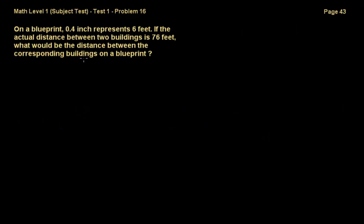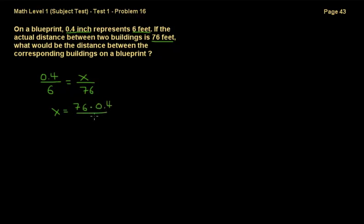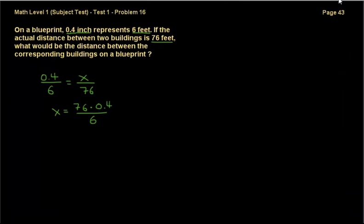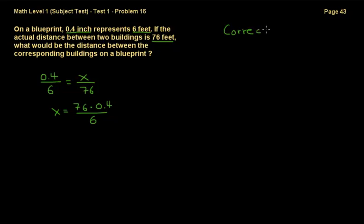Problem 16 states that on a blueprint, 0.4 inch represents 6 feet. If the actual distance between two buildings is 76 feet, what would be the distance on the blueprint? We know 0.4 inch equals 6 feet, so we set up a proportion: x over 76 equals 0.4 over 6. Multiplying both sides by 76 gives x equals 76 times 0.4 divided by 6, which is approximately 5.0667. So the correct answer is B, which is 5.1 — the closest option.